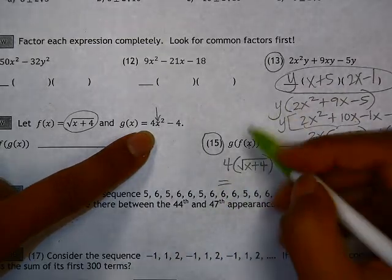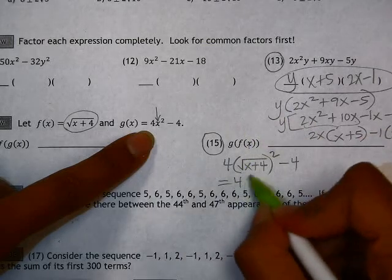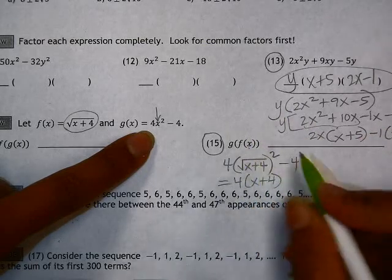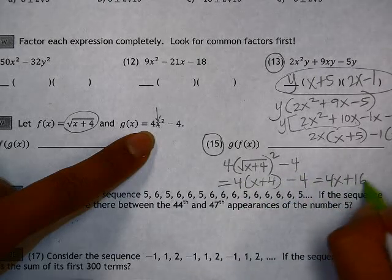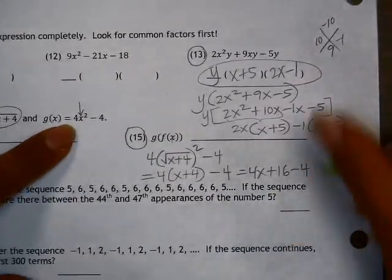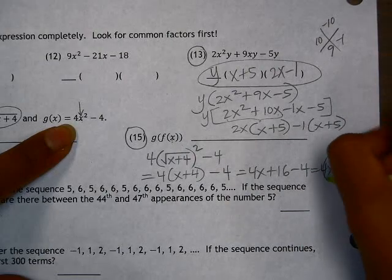Let's see what we get when we do this. If you square a square root, you just end up getting the radicand, the x plus 4. Simplifying this gives us 4x plus 16 minus 4, adding like terms gives us 4x plus 12.